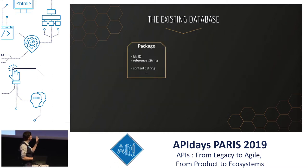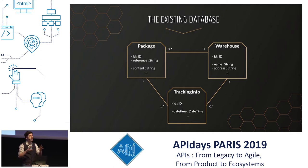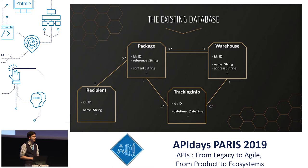Here's the existing database you have. You have a package with an ID, a reference, and content. It's linked to a warehouse where there's an ID, a name, and an address. Here's how you track the packages: you have a tracking info which links a package to a warehouse using a datetime. You also have recipients linked to packages. This is the database you have, and during this talk I want to show you how to turn it into a public tracking API.